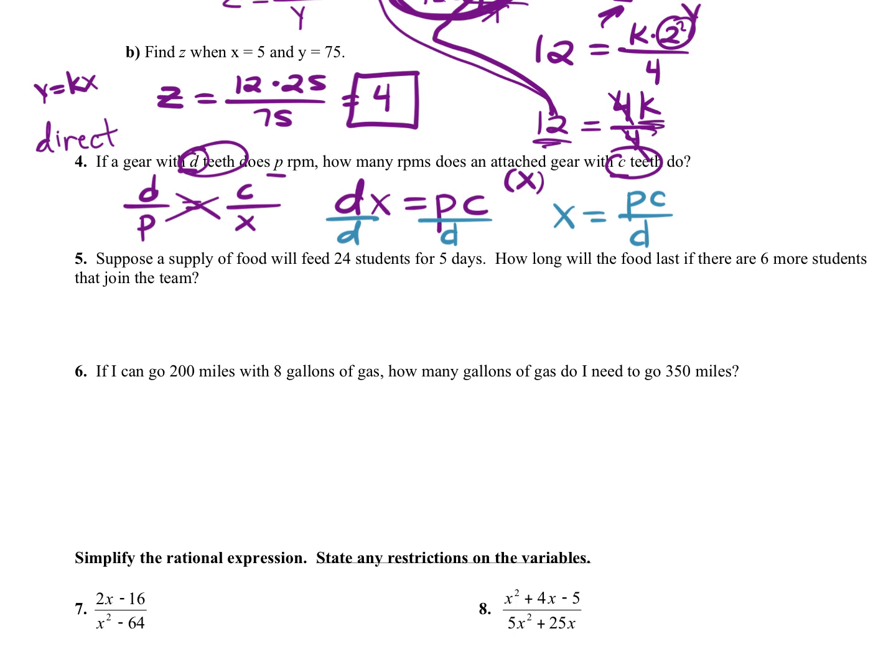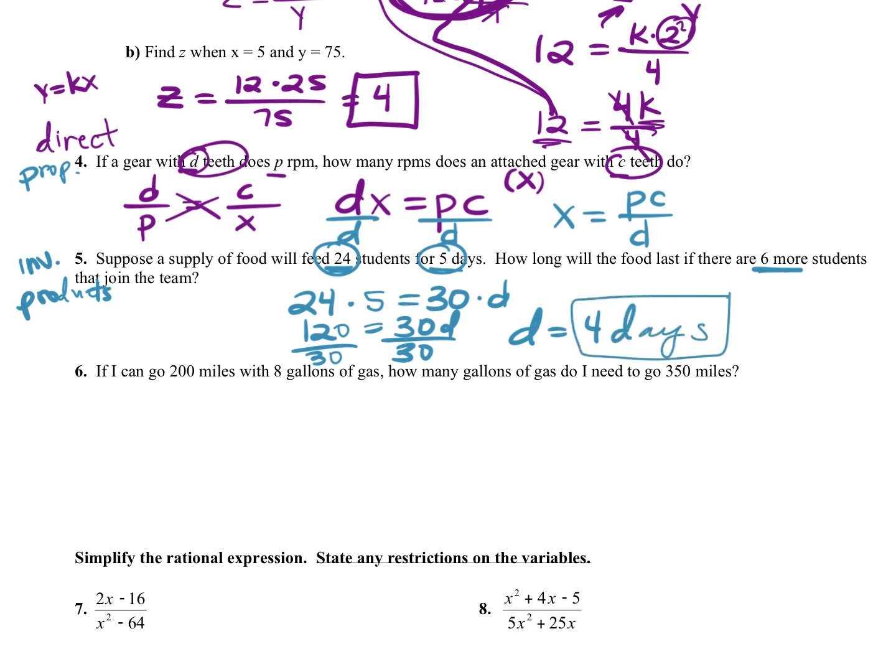Look at this one. Suppose a supply of food will feed 24 students for five days. How long will the food last if there are six more students that joined the team? So the more people, the less food per person. So this is inverse variation. And remember, so direct, you set up proportions. Inverse, you set up products to set equal. So 24 students for five days, you go 24 times five. If there are six more students, what number are we putting down for our students? 30, 24 plus six would be 30 times some number of days. How do you solve that? 24 times five is 120 equals 30 D and then divide by 30. So D is four. So it would last four days if you had six more students.